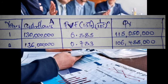For year two, cash flows are 136 million. Substituting the interest rate of 13 percent and n = 2 into our formula, the present value interest factor is 0.783. The present value is 136 million × 0.783 = 106 million 488 thousand, which is the present value of 136 million two years from now.